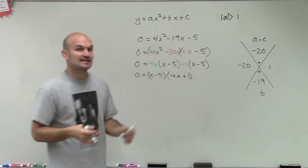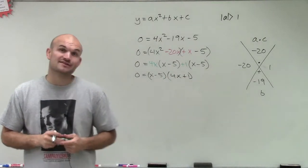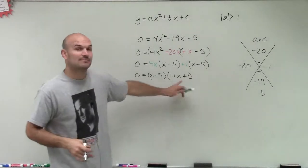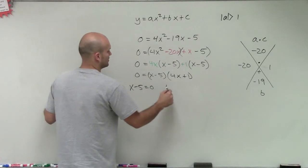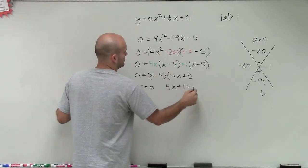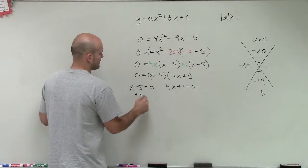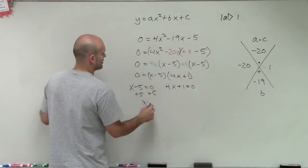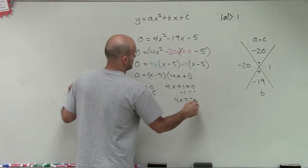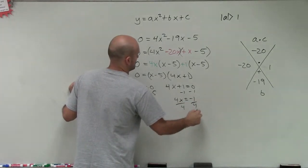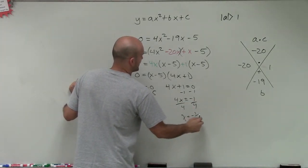Now you can see that my quadratic is in factored form, where I can apply the zero product property. So I'm going to set each factor to 0 and then solve. So x equals 5 and x equals negative 1 fourth.